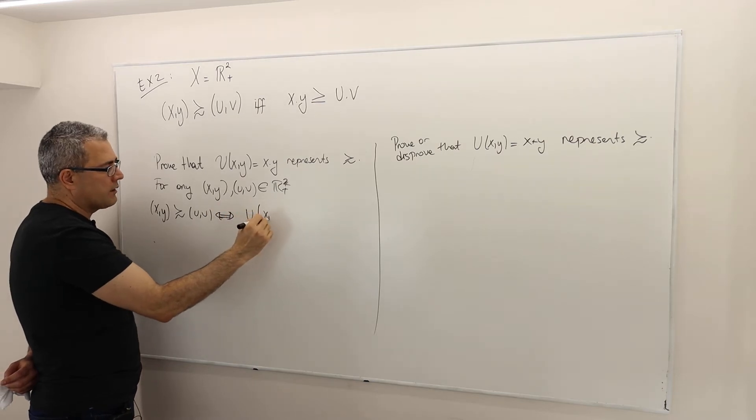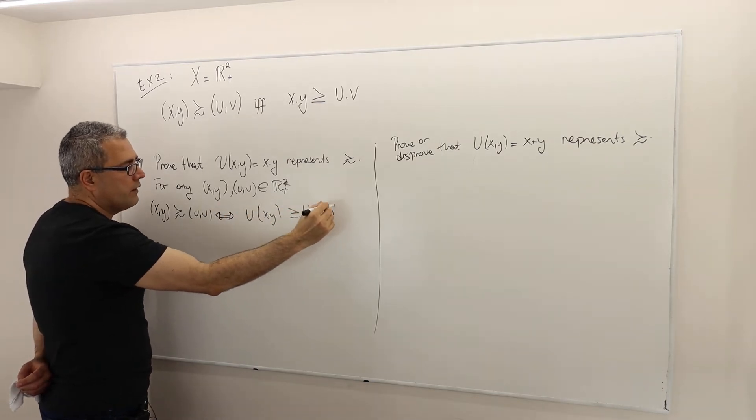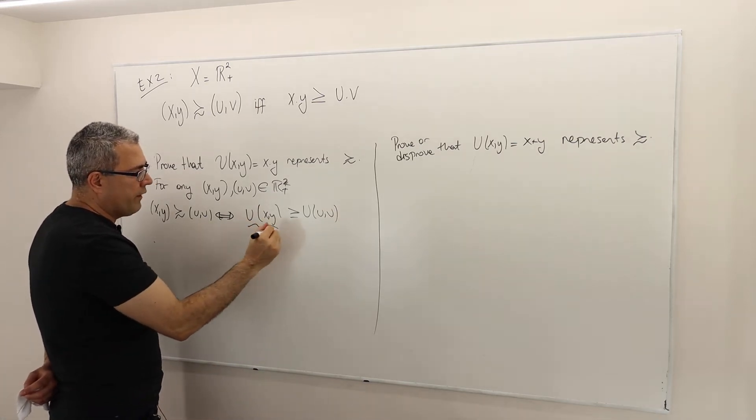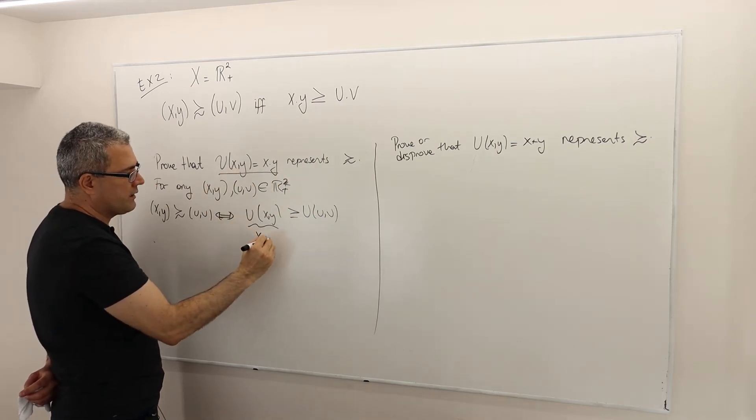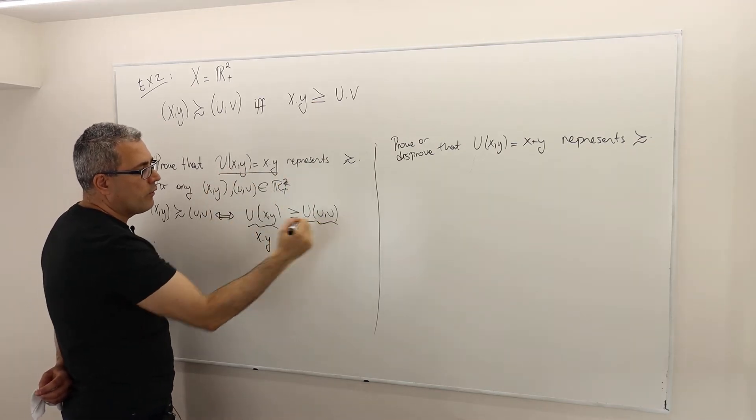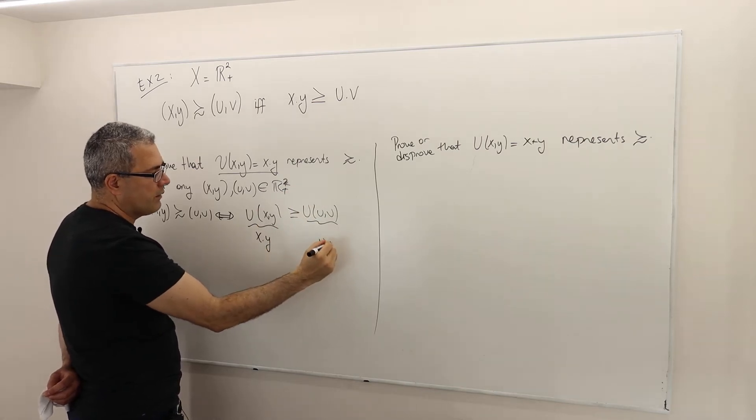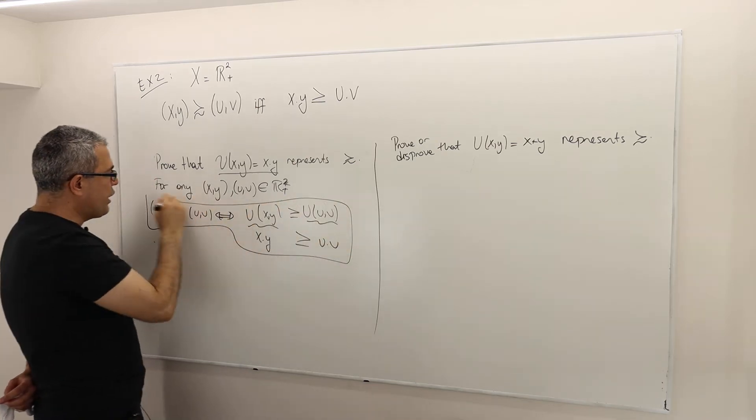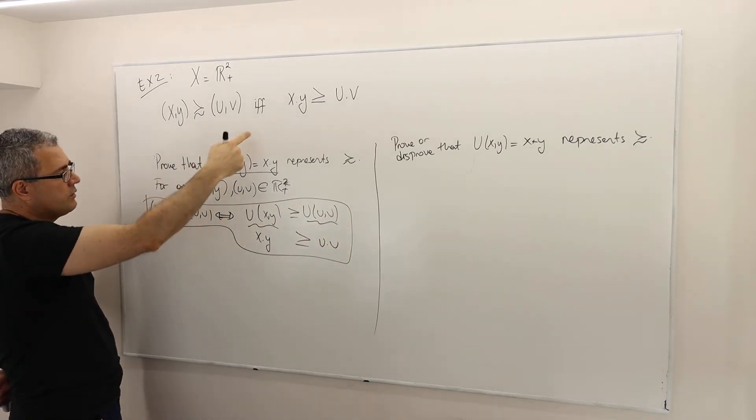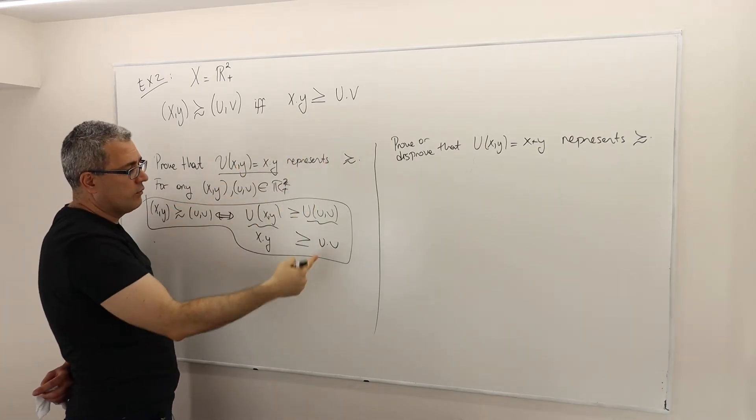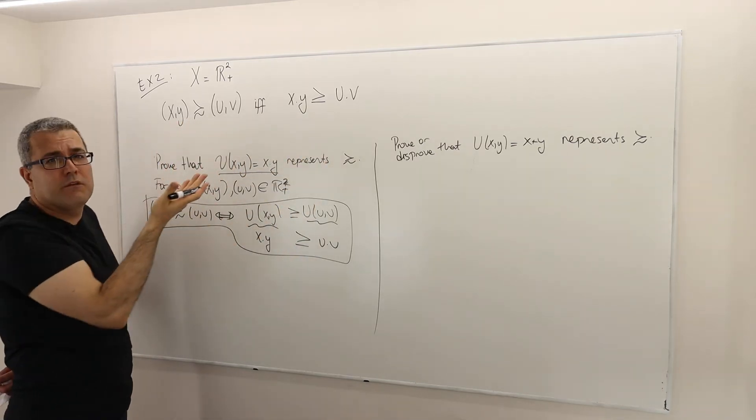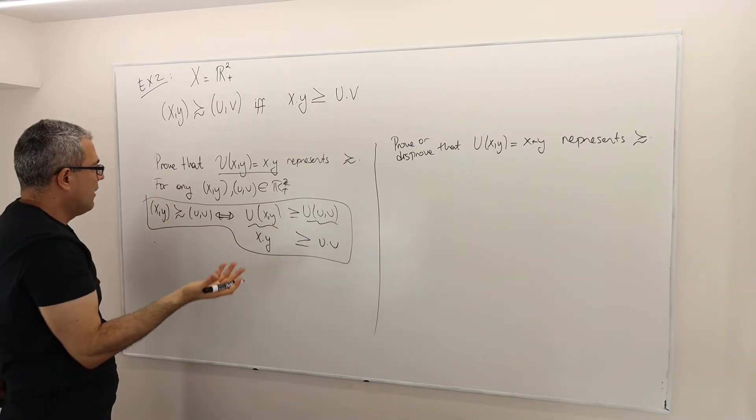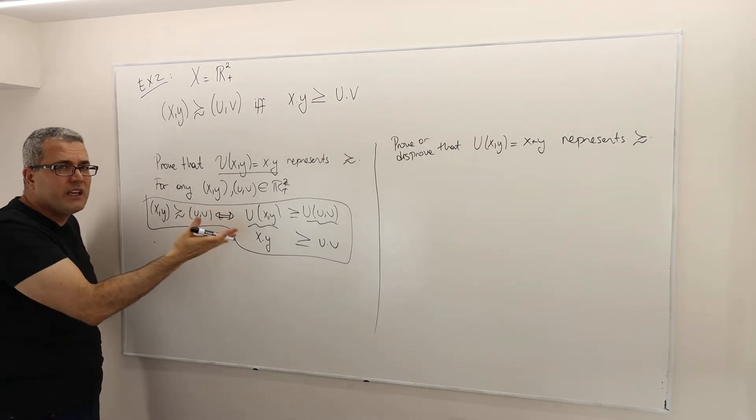What is U(XY)? Well, according to my utility function, it's X times Y. This argument we know is true: XY is at least as good as UV if and only if X times Y greater than or equal to U times V, simply by the definition of this preference relation, this binary relation.